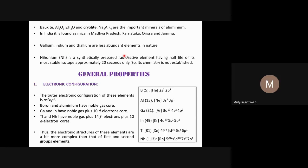Nihonium is synthetically prepared and does not exist naturally — it is produced by transmutation of elements. The term transmutation relates to nuclear reactions; for example, Rutherford's discovery of the proton involved bombarding nitrogen with alpha particles to obtain oxygen-17 and a proton.